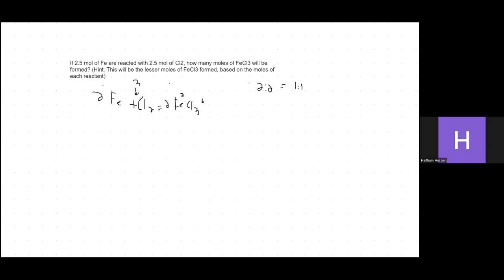We are given 2.5 moles of iron and 2.5 moles of Cl₂. So the moles of Fe equal 2.5, and the moles of Cl₂ also equal 2.5.